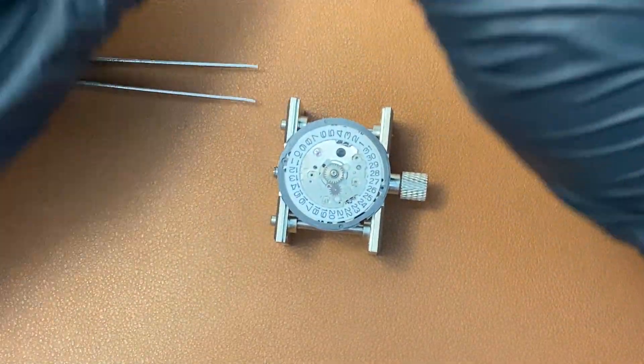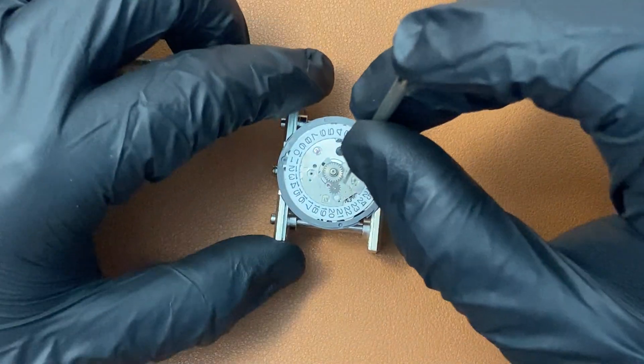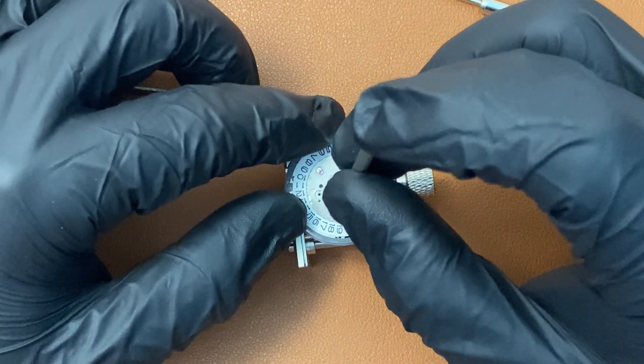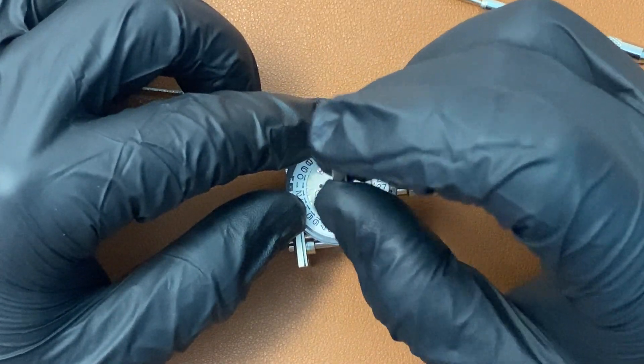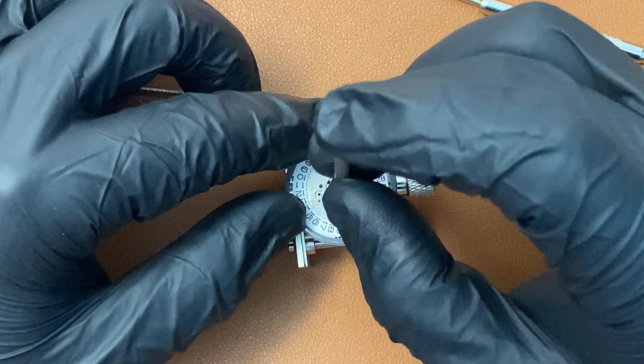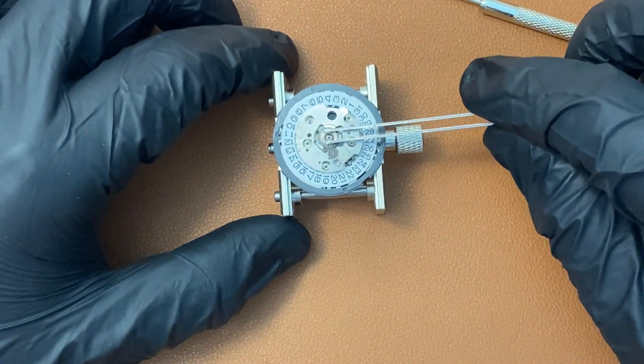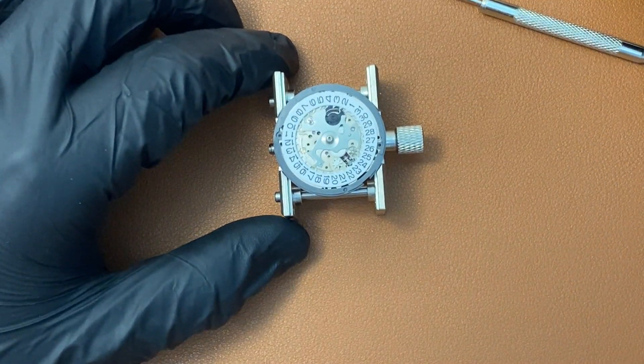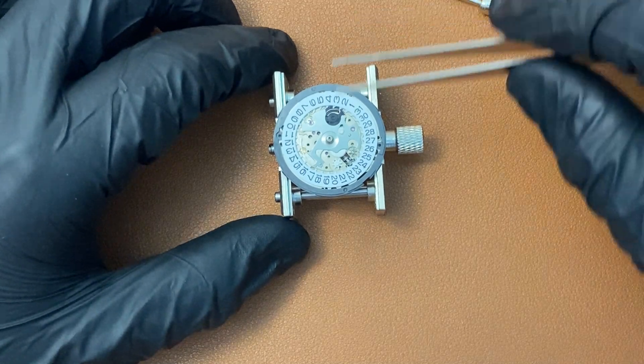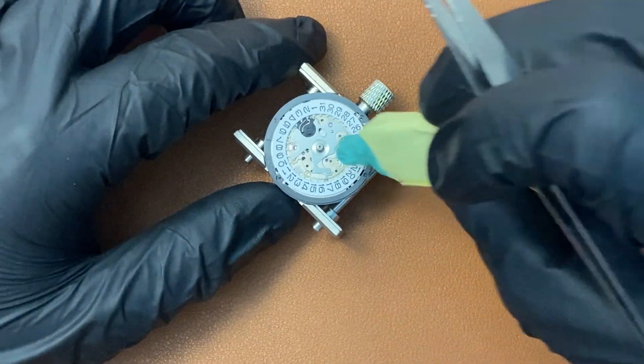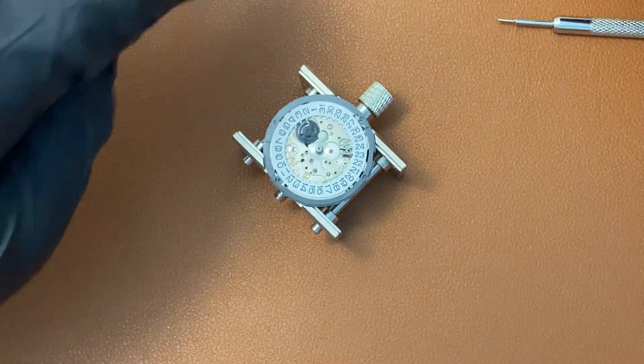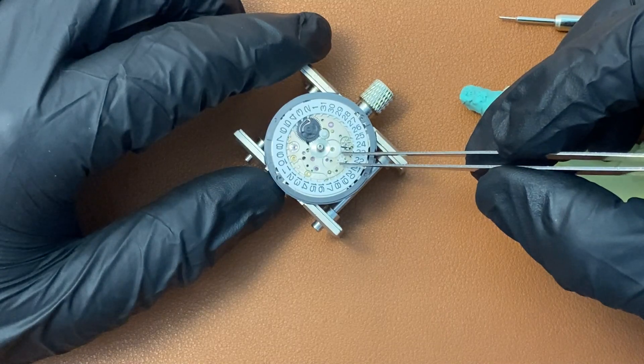I'll link to a better video of someone on YouTube who disassembled this movement in a much more clear and concise way, and I hope that would help you. Remove this part of the movement and then use the rodico to stick this part out.